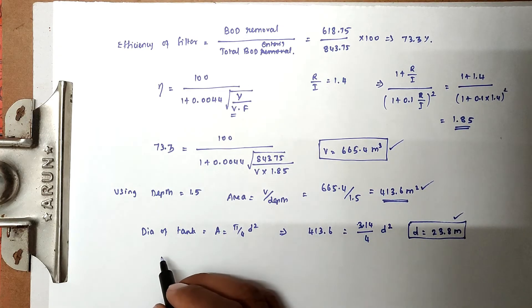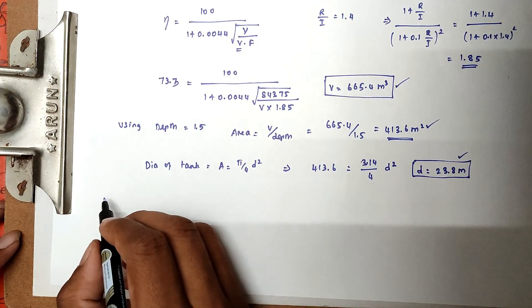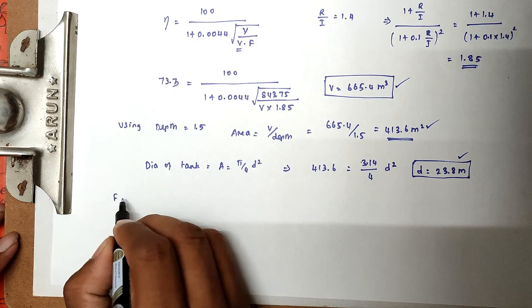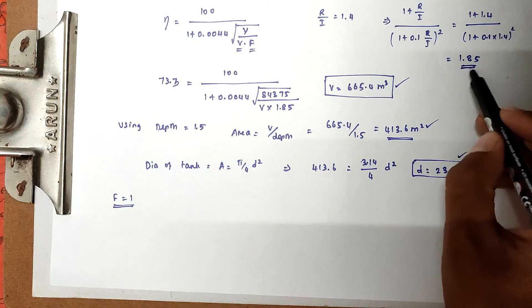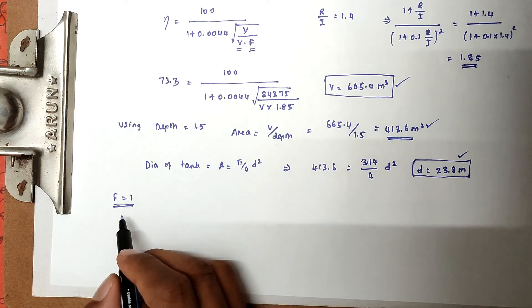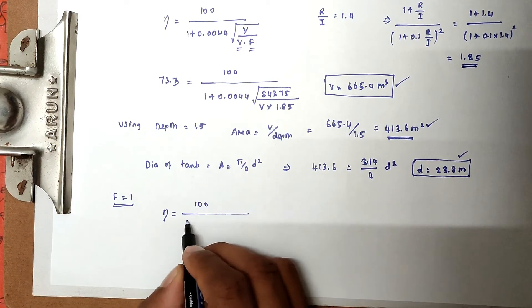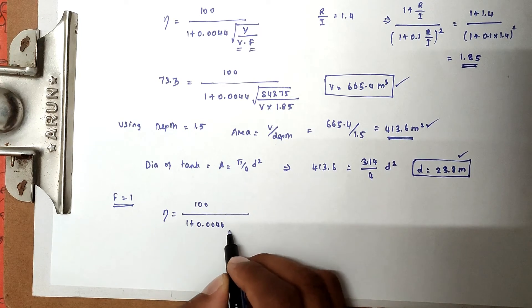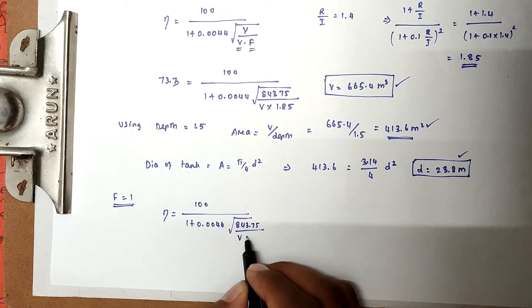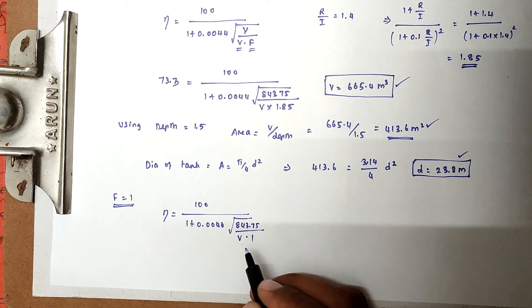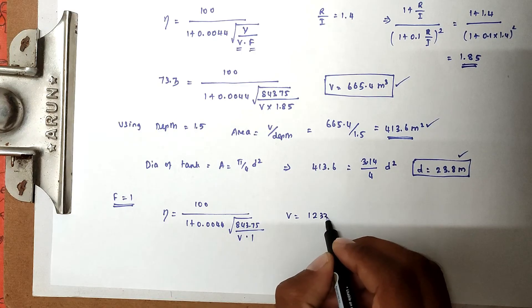Now for the standard rate trickling filter, the recirculation factor F equals 1. Substituting into the NRC formula: 73.3 = 100 / (1 + 0.0044 × √(843.75 / (V × 1))). Solving this gives volume V = 1,233 m³.